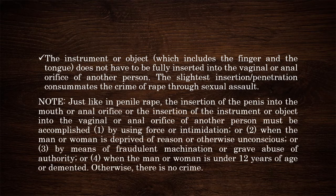Also take note that, just like in penile rape, the insertion of the penis into the mouth or anal orifice, or the insertion of any instrument or object into the vaginal or anal orifice, must be accomplished in any of the following ways: (1) by using force or intimidation, (2) when the man or woman is deprived of reason or otherwise unconscious, (3) by means of fraudulent machination or grave abuse of authority, or (4) when the man or woman is under 12 years of age or demented. Otherwise, there is no crime of rape through sexual assault.